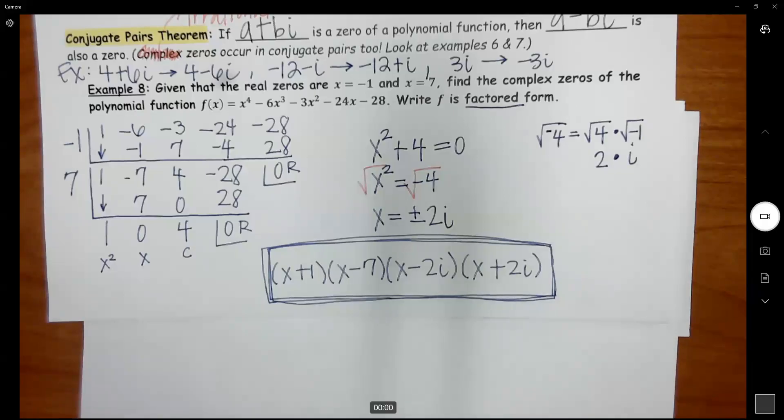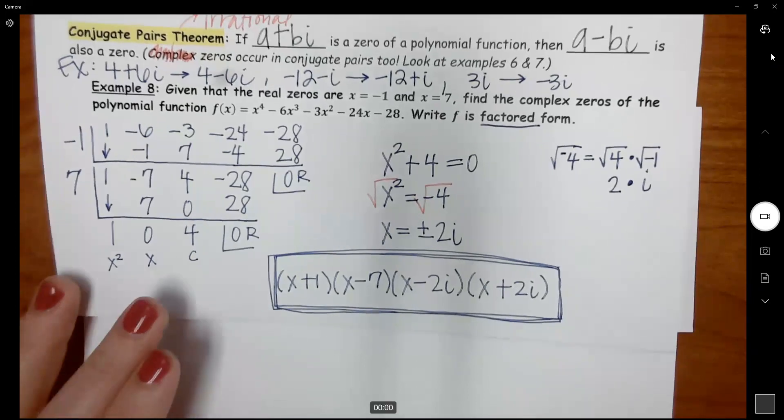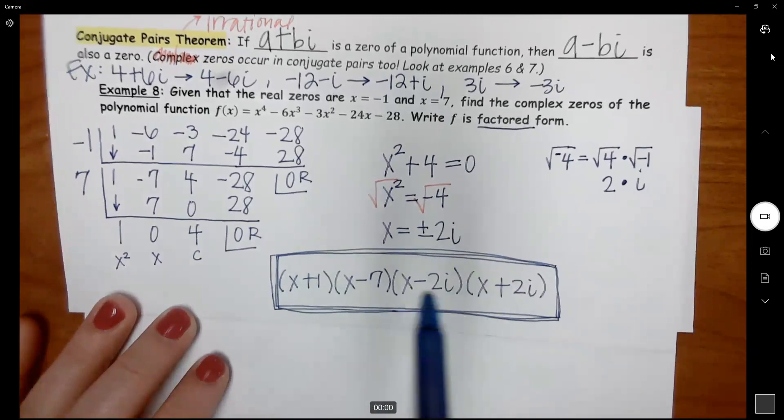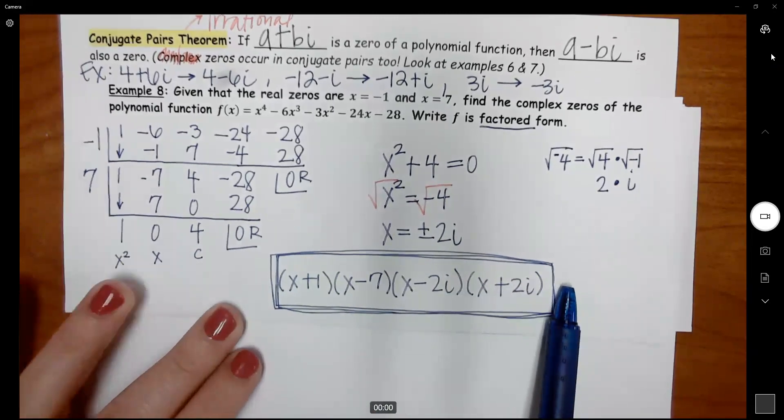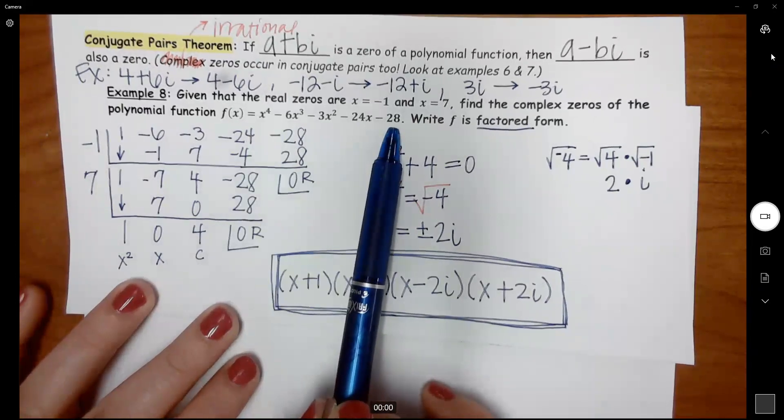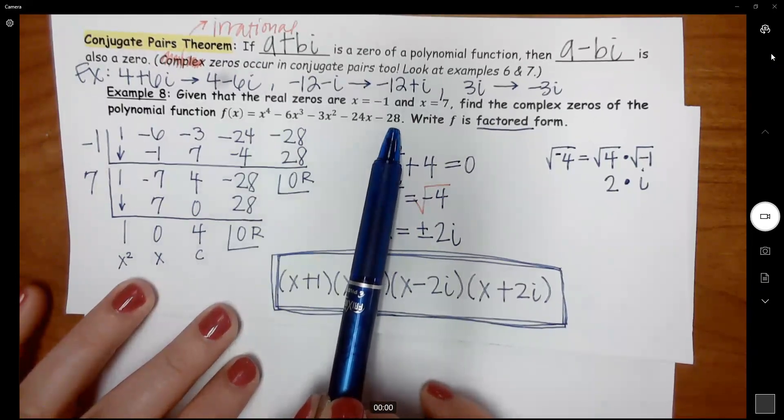All right, here's the last portion of this extremely long lesson. The last example, we are basically wanting to start from right here, and you are multiplying this out to get back to the polynomial that's not in factored form.